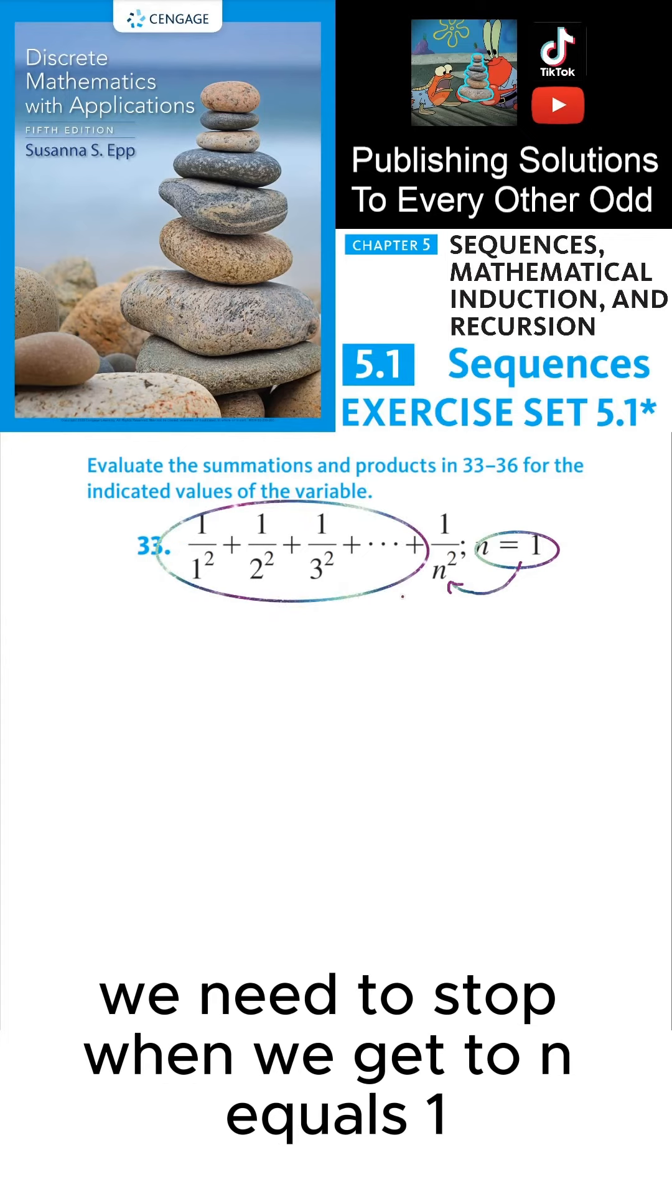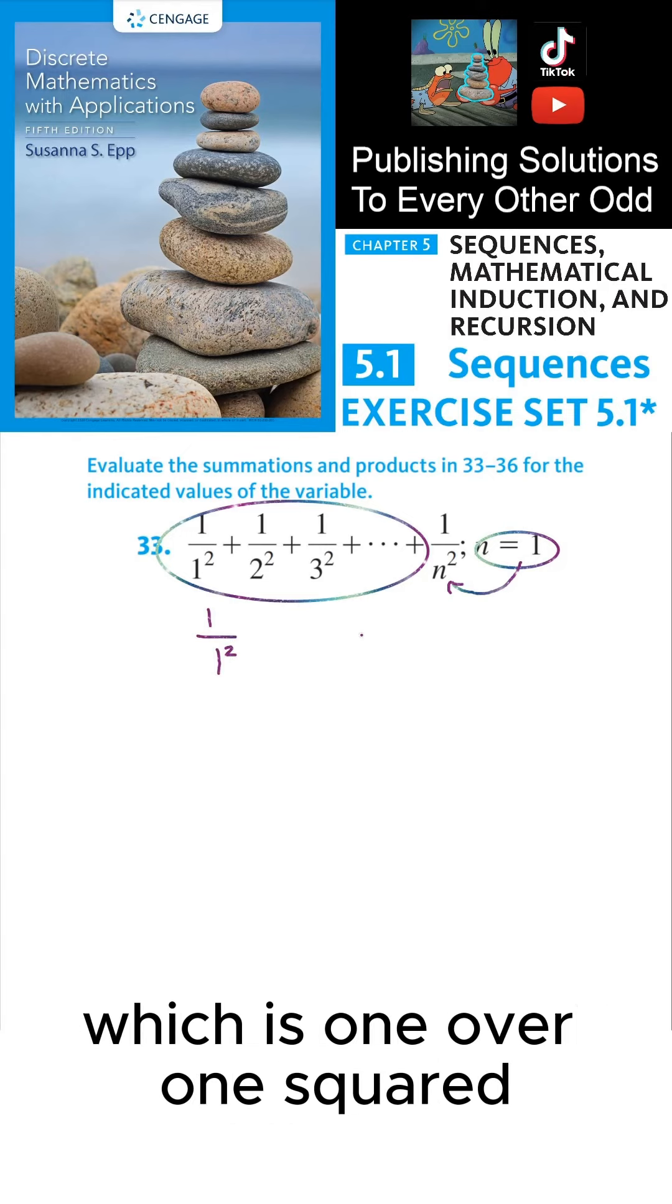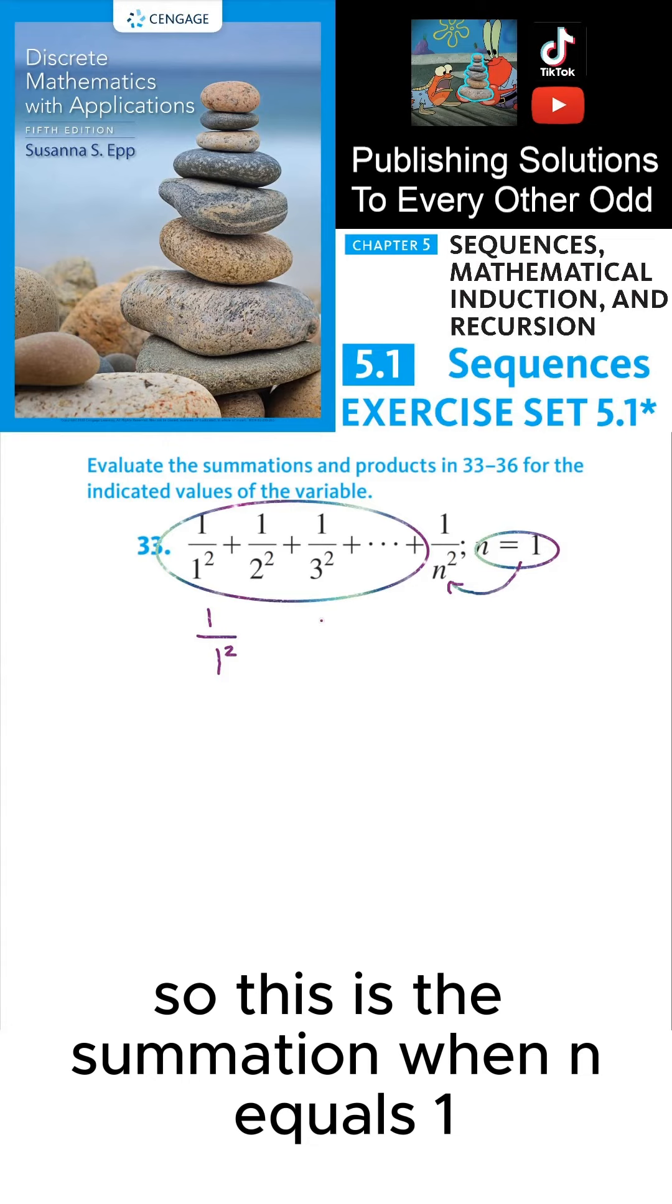we need to stop when we get to n equals 1, which means we need to stop right after we write down the first term, which is 1 over 1 squared. So, this is the summation when n equals 1, which is just 1.